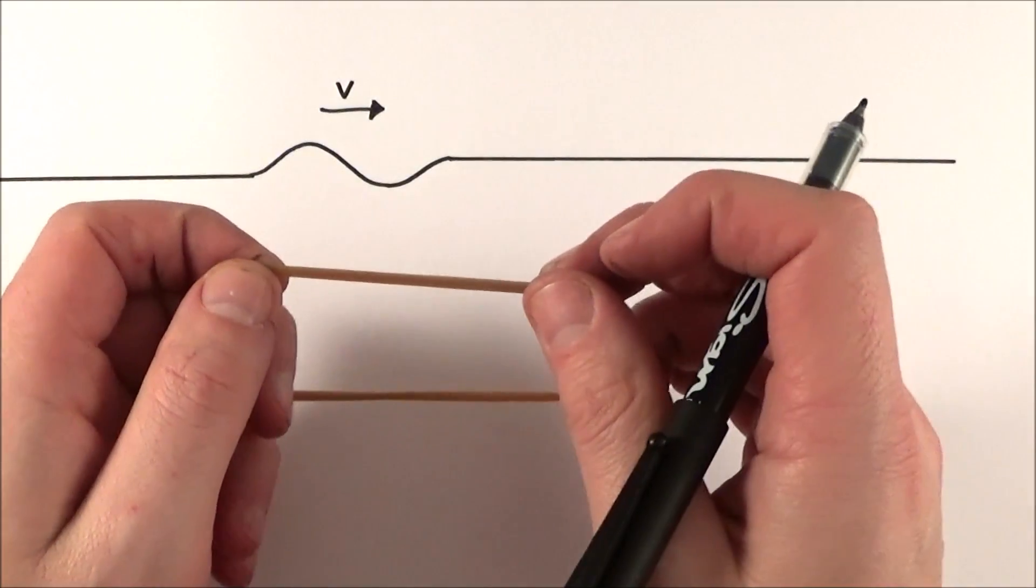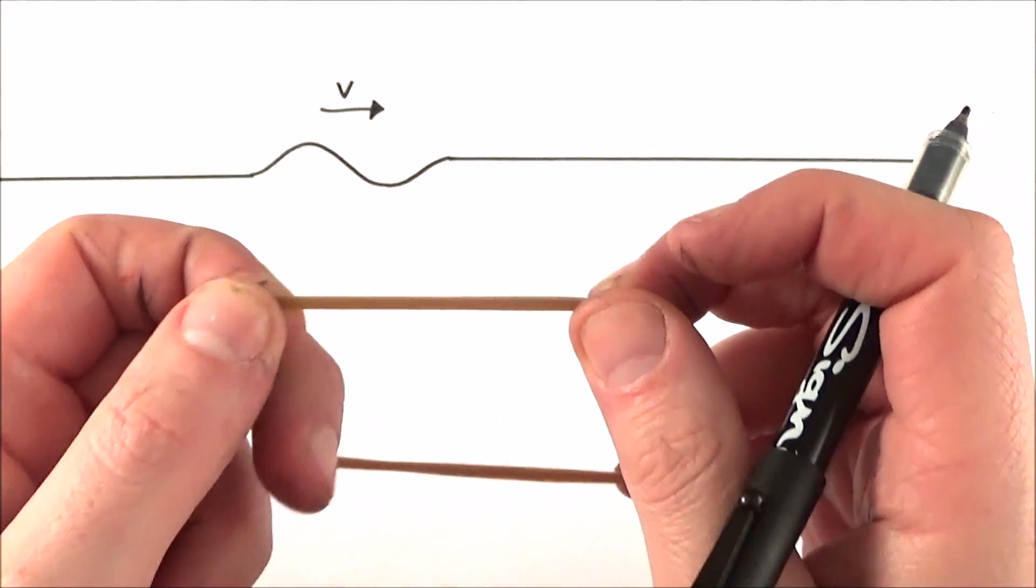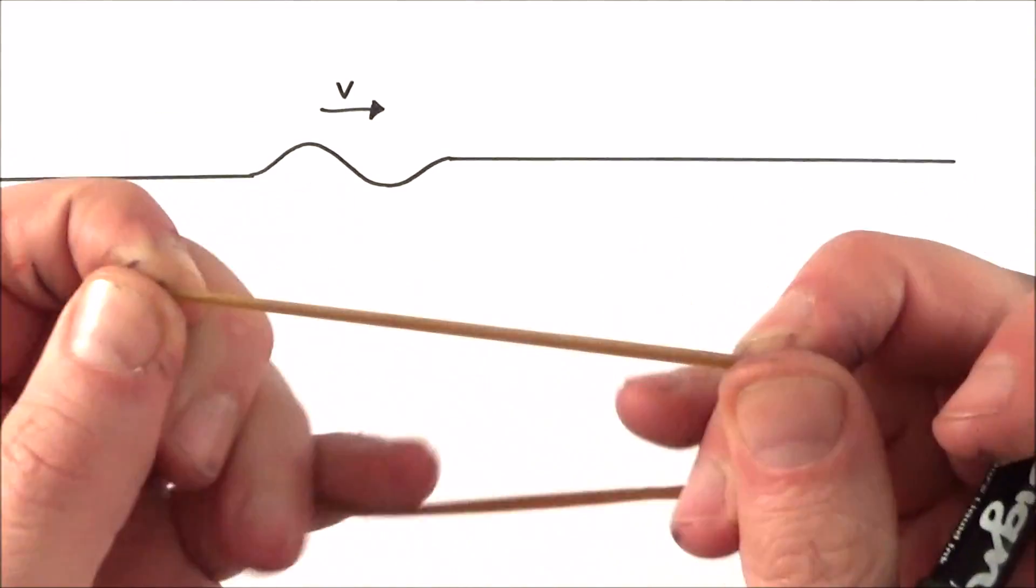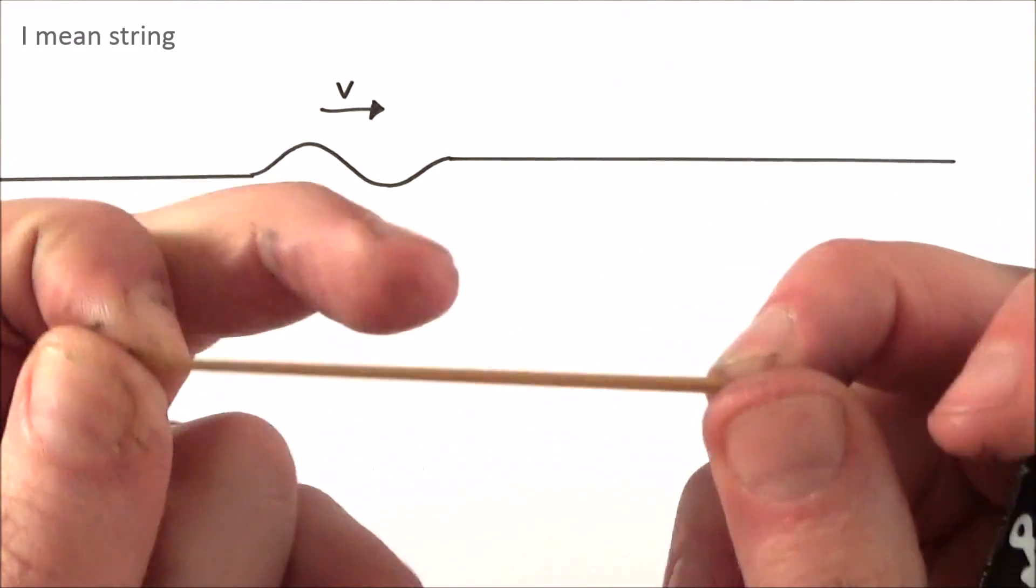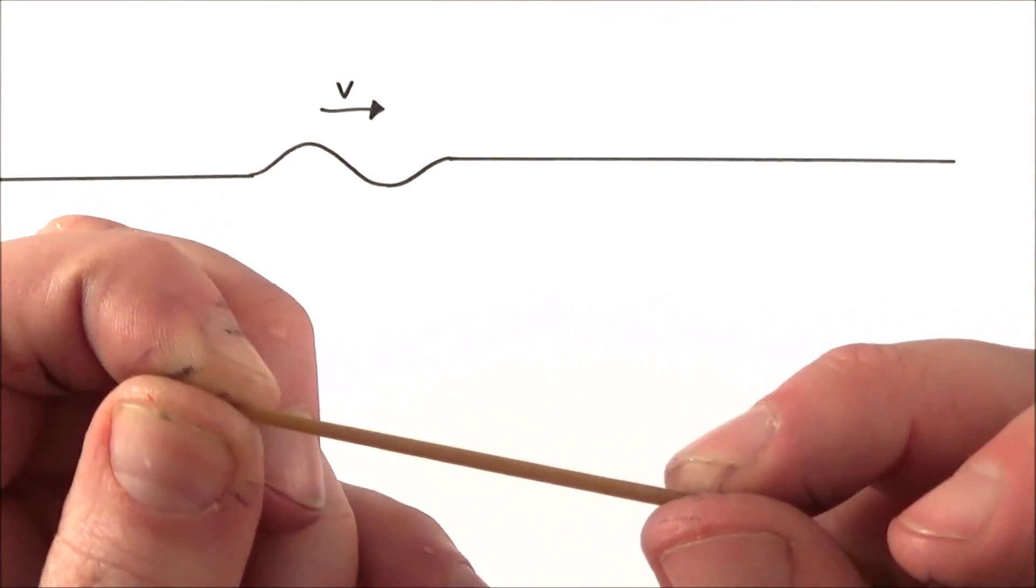The first thing that really tells us how quickly that wave is going to move is the tension in the string, and the tenser the string, the quicker that wave moves along it.